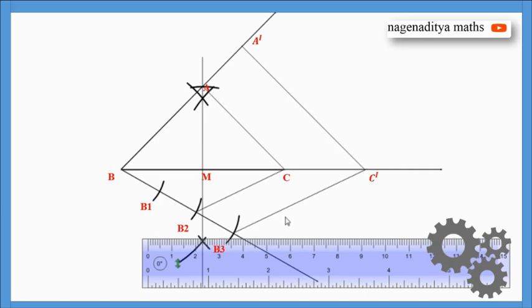So here A dash B C dash is the required triangle which is 3/2 times of the given triangle ABC, an isosceles triangle whose altitude is 4 cm. Thank you.